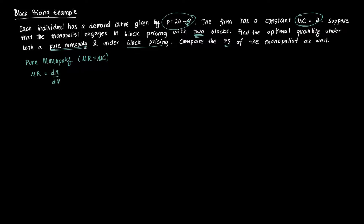To get revenue, that's just P times Q. So P times Q is (20 minus Q) times Q, which gives us 20Q minus Q squared. Then if we take the derivative of this revenue function with respect to Q, that's going to be 20 minus 2Q.